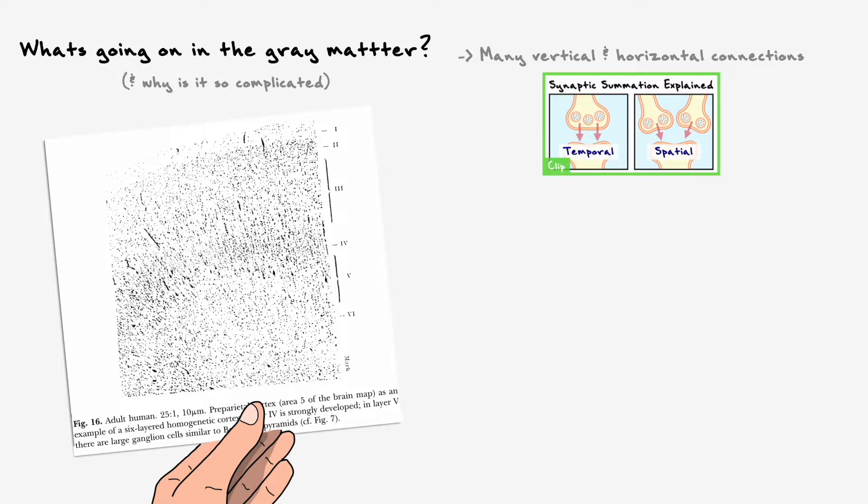Some estimations believe that in the cortex, there are 16 billion neurons, so if each neuron produces thousands of synapses, the amount of connections in the brain rapidly becomes an insanely high number.